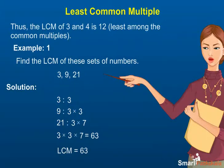the smallest number that can be divided evenly by 3, 9 and 21. We can check our work by verifying that 63 can be divided evenly by 3, 9 and 21. LCM is equal to 63.